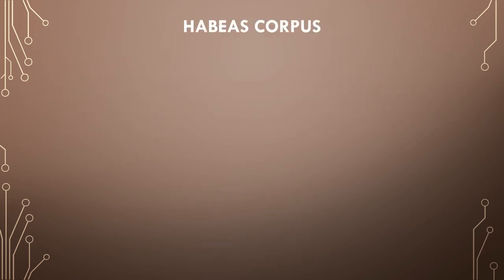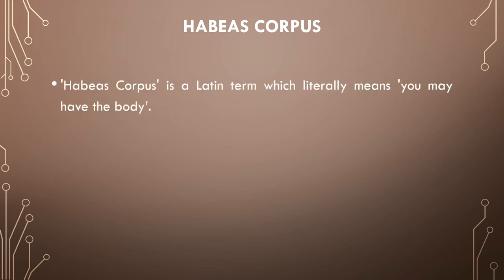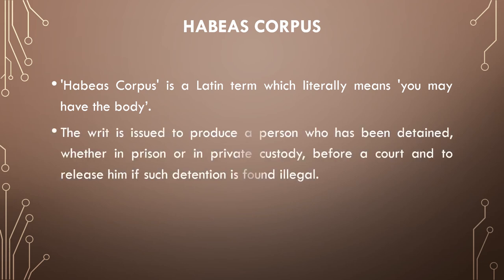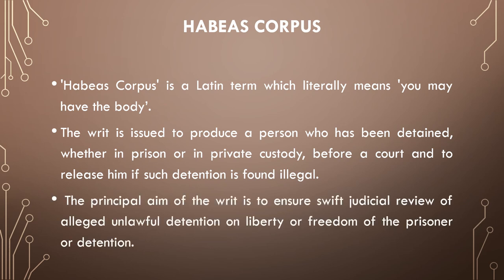The first is habeas corpus. It is a Latin term which literally means 'you may have the body.' The writ is issued to produce a person who has been detained, whether in prison or in private custody, before a court and to release him if such detention is found illegal. The principal aim of this writ is to ensure swift judicial review of alleged unlawful detention on the liberty or freedom of the prisoner.